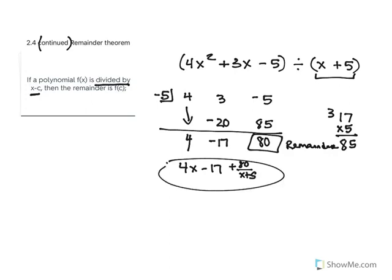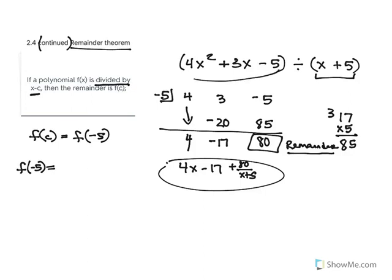We're dealing with the remainder theorem right now, so what we're focusing on is identifying a certain value. If a polynomial f(x) is divided by x minus c, then the remainder is f(c). In our particular problem, f(c) would be f(negative 5). So what the remainder theorem is saying is that whatever you get as your remainder is going to be the value of f(c). If I wanted to find f(negative 5), I would take the given function and substitute in negative 5 for every x and simplify.